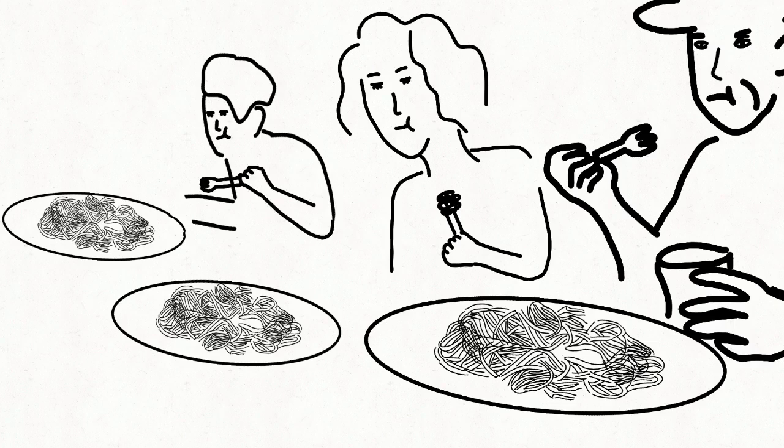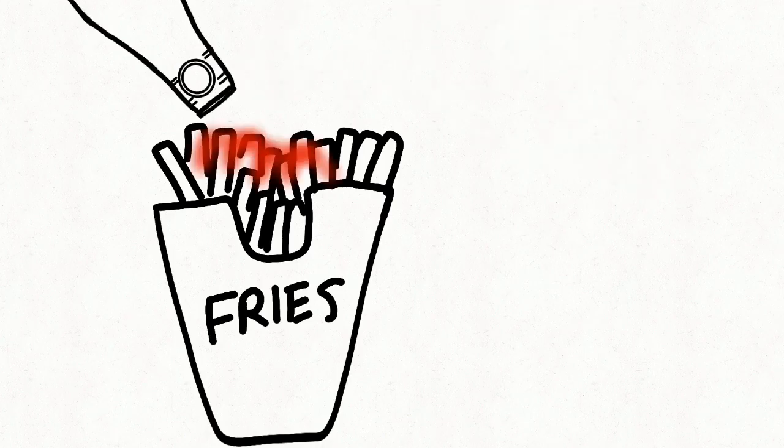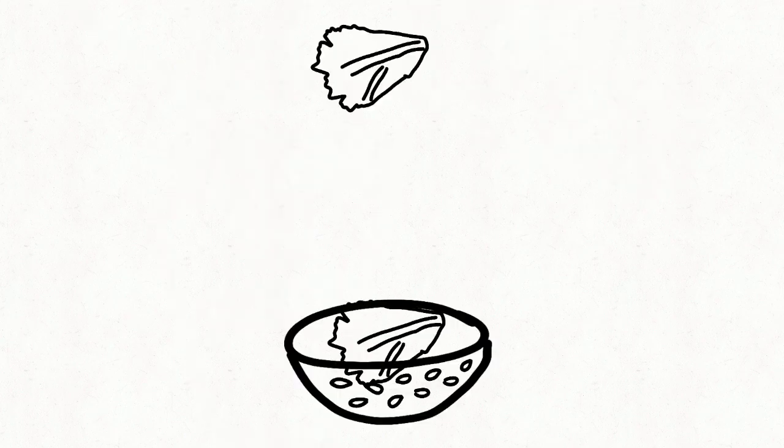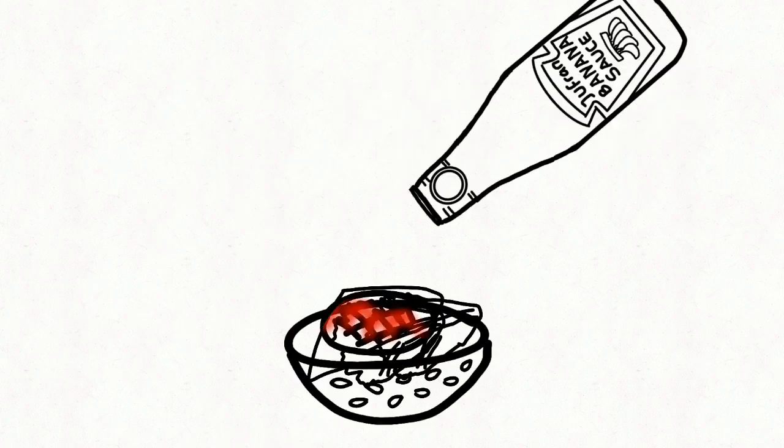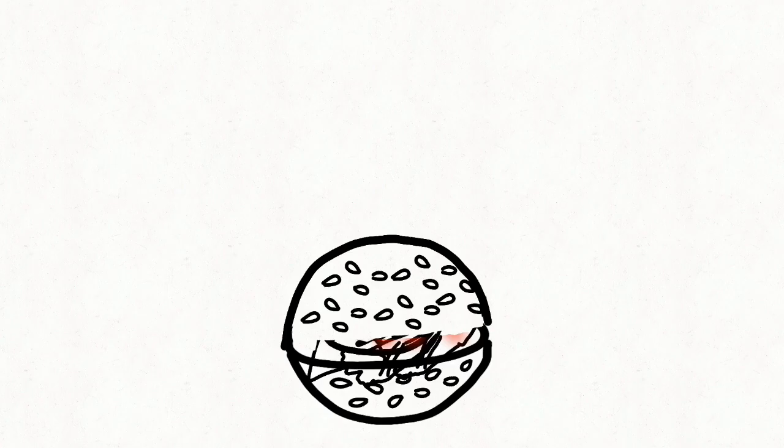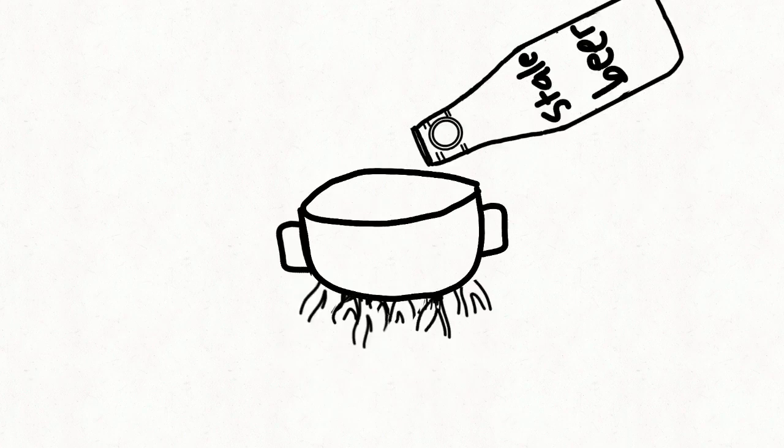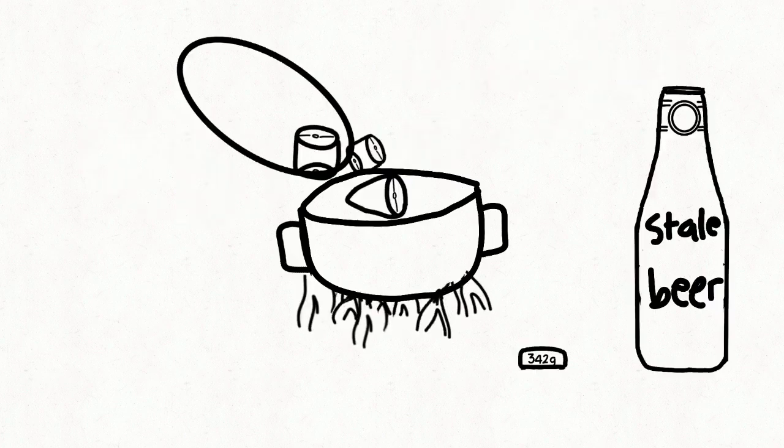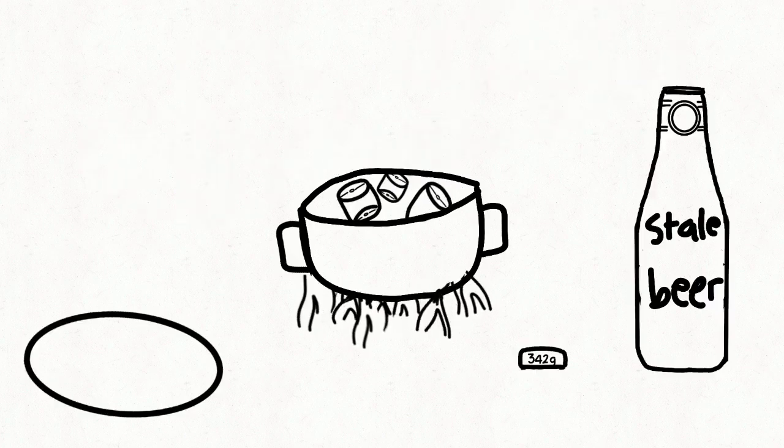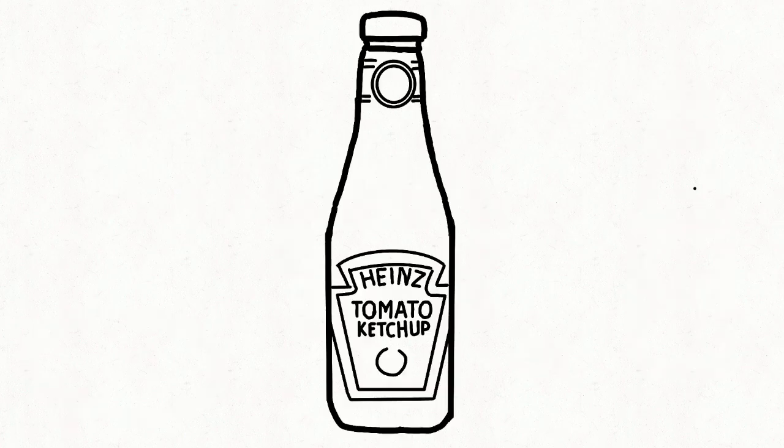In October 2000, Heinz introduced colored ketchup products called EZ Squirt, which eventually included green (2000), purple (2001), mystery, pink, orange, or teal (2002), and blue (2003). These products were made by adding food coloring to the traditional ketchup. By January 2006, these products were discontinued.